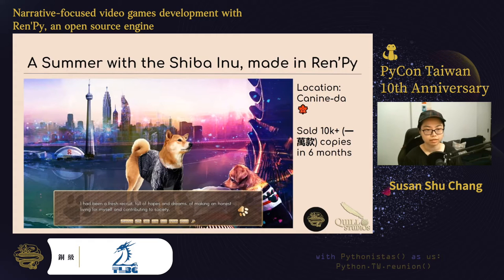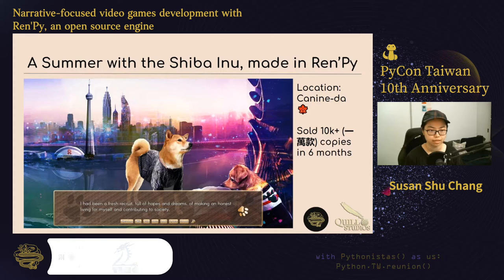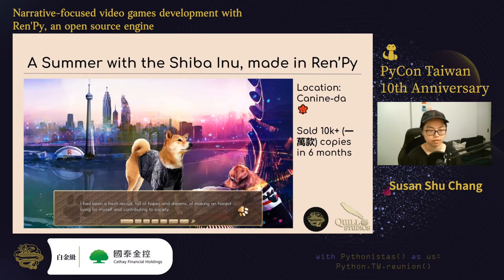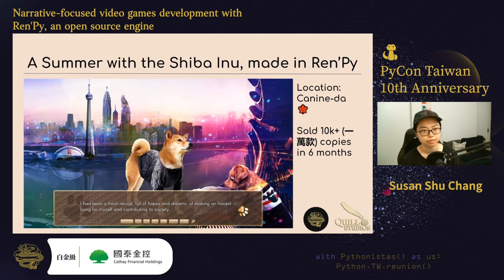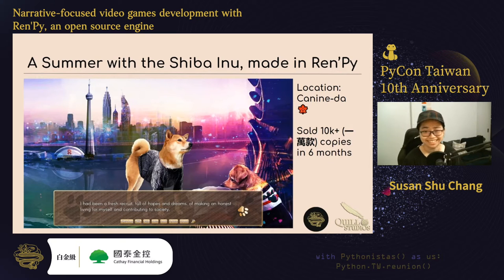从头说起的话，这个工作室我是从 2017 年开始，那个时候有一个游戏构想，然后写了一个剧本。写完之后，感谢有 Ren'Py，我把这个剧本写到了这个游戏引擎里面，然后现在它已经在各种平台上发行了一两年了，卖了一万款。对我这个第一次开发游戏的人来讲，已经算是不错了。它叫做 Summer with the Shiba Inu，就是猜拳的视觉小说。